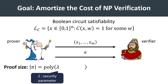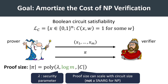The goal here is to amortize the cost of NP verification. We seek a construction where a proof on m NP statements scales polynomially with the security parameter, but importantly, polylogarithmically with the number of instances being proved. We do allow the proof size to grow with the size of checking a single instance, so this is not a succinct argument or SNARK — the goal is to amortize proof size and verification costs over a batch of instances.